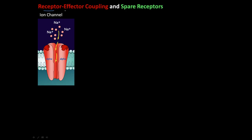We're going to talk about the receptor-effector coupling and spare receptors. When we're talking about an ion channel here, some ligand comes and binds right here to this spot, and then when that ligand binds it opens up this channel. In this case, sodium is allowed to go straight through the ion channel. If I have six receptors here...